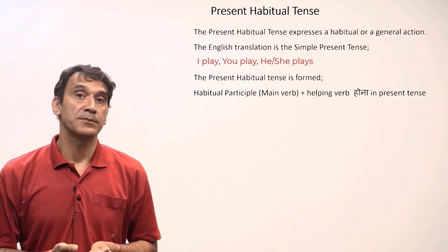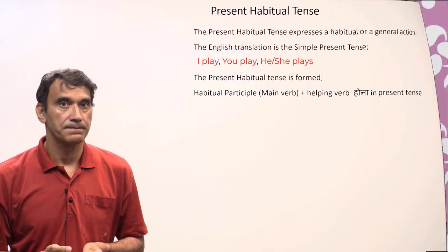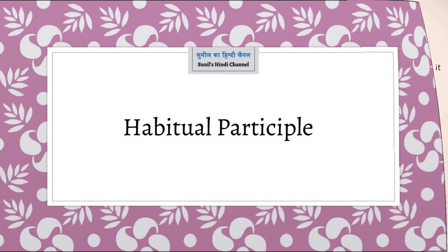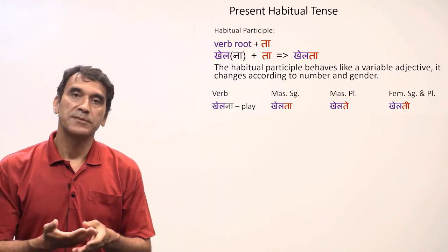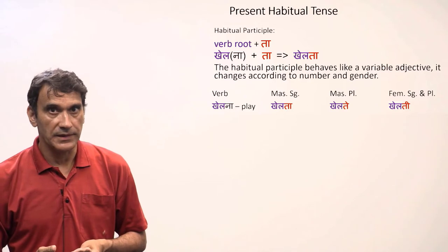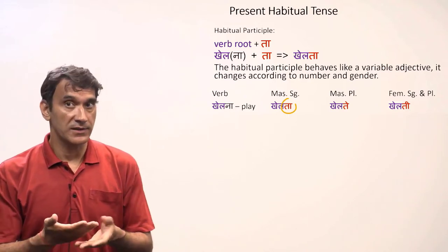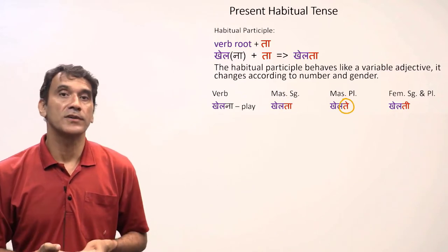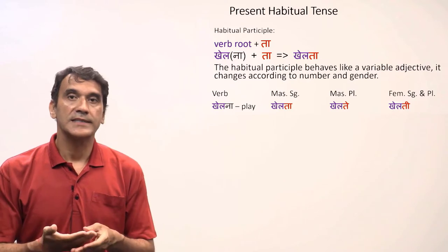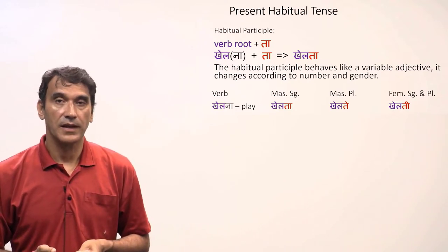Before we learn how to make the present habitual tense, let's learn how to make the habitual participle. The habitual participle is formed by adding a suffix to the root of the verb. The suffix 'ta' changes according to number and gender: 'ta' is for masculine singular, 'te' is for masculine plural, and 'ti' is for feminine singular and plural.